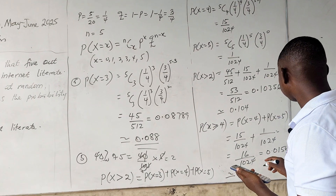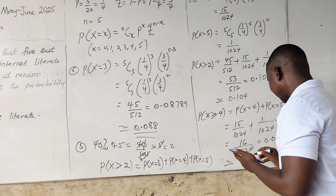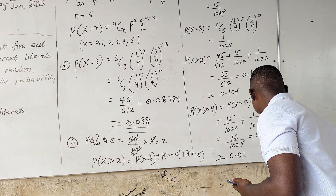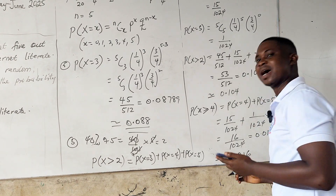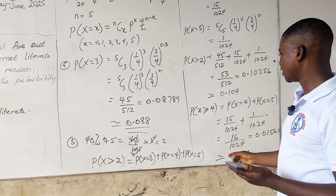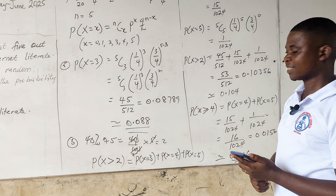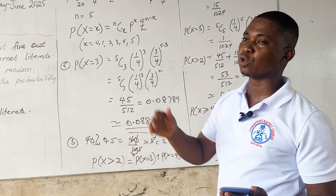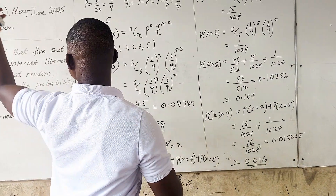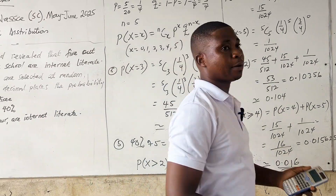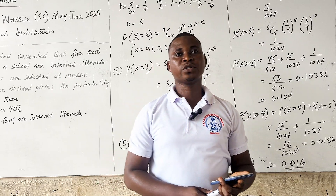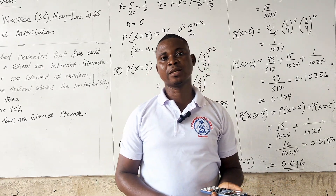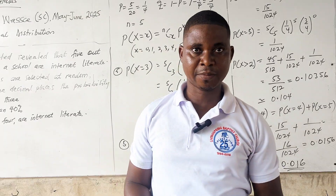Rounded to three decimal places, the answer is 0.016. That is the solution to part (c), completing all answers to question number 12. Please continue to subscribe to François Maths Class on all our social media channels. Have a nice day, bye bye.